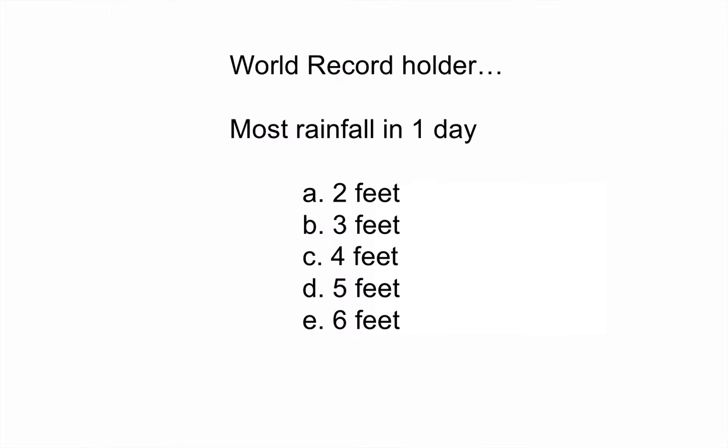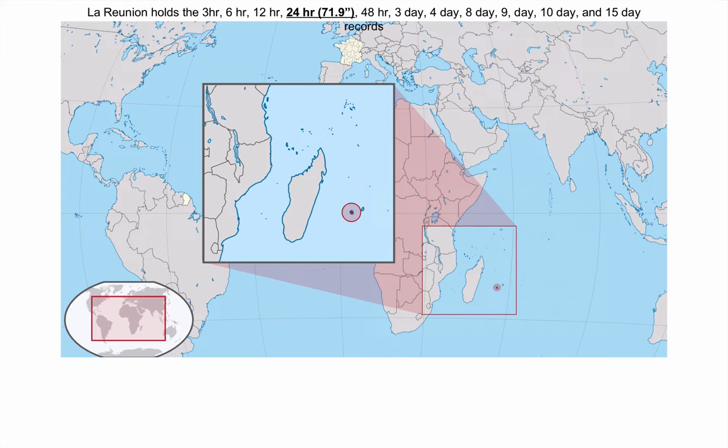How about this one? Record holder for one day: 2 feet, 3 feet, 4 feet, 5 feet, or 6 feet? Answer: 6 feet. There is an island called La Reunion. It holds the record for the 3 hour, 6 hour, 12 hour, 24 hour, which is 71.9 inches, 48 hour, 3 day, 4 day, 8 day, 9 day, 10 day, and 15 day rainfall records. It's right here off the coast of Madagascar and gets hit with major tropical cyclones.